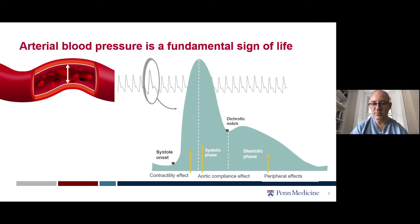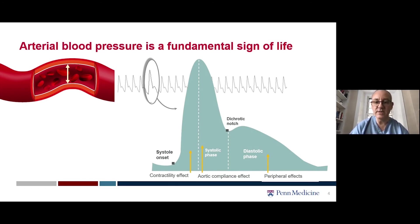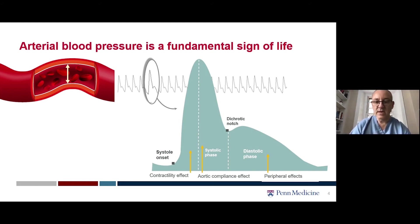When a patient is admitted to the hospital for major surgery or into the intensive care unit, it's very common for us to have an arterial catheter in place. The catheter uses a signal from a transducer and displays a continuous beat-to-beat blood pressure, which helps us know that we're delivering adequate perfusion to the body and tissues. What we're looking at here is a typical arterial waveform broken down into its different components, and from the different parts we can interpret what's going on with the patient's physiology.